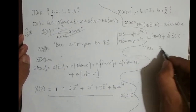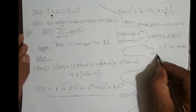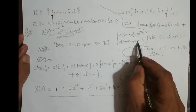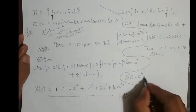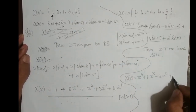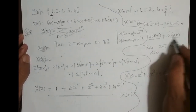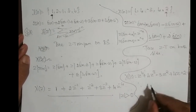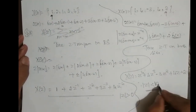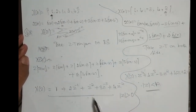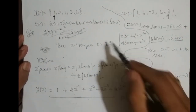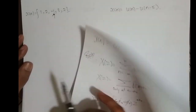Taking Z-transform on both sides: X(Z) equals the Z-transform of delta(n plus 4), which is Z to the power 4. Plus 4 times Z cubed, minus 3 times Z squared, plus 4 times Z to the power 1, plus 2. The Z-transform of delta(n) is 1.